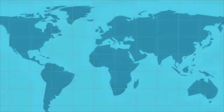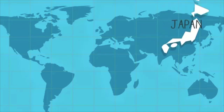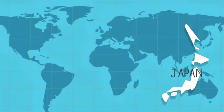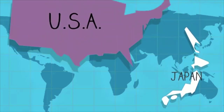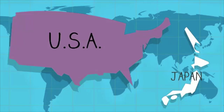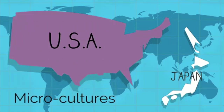When we first think about cultures, we often think about countries. For example, Japanese culture or U.S. culture. These are large-scale cultures. There are also what are called microcultures. These are subcultures that exist within larger cultures.